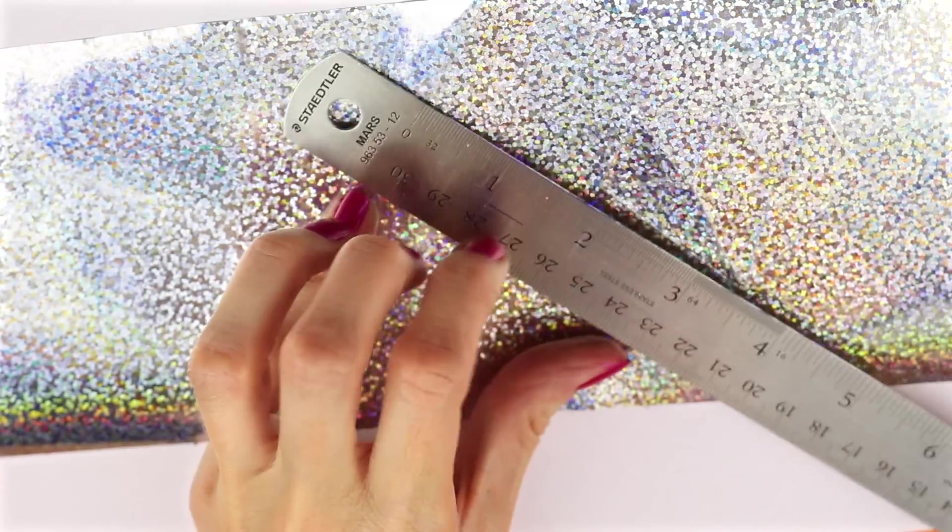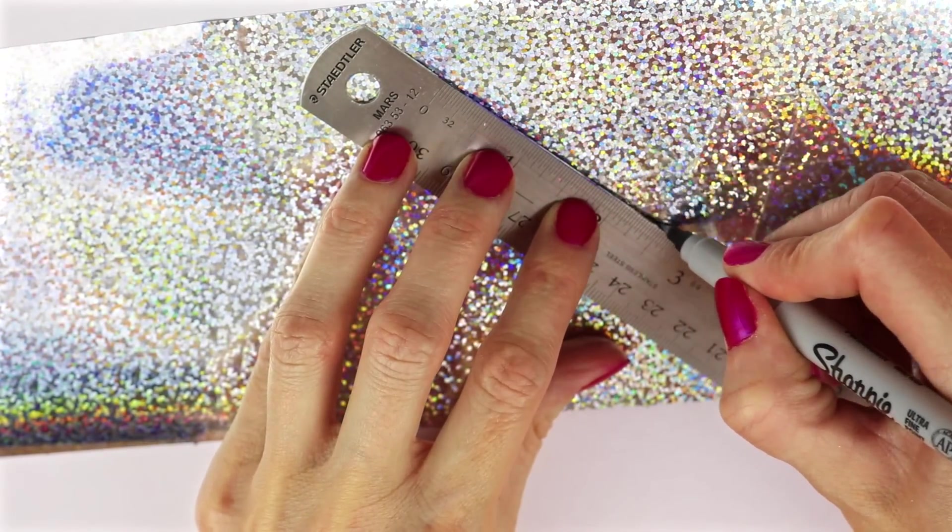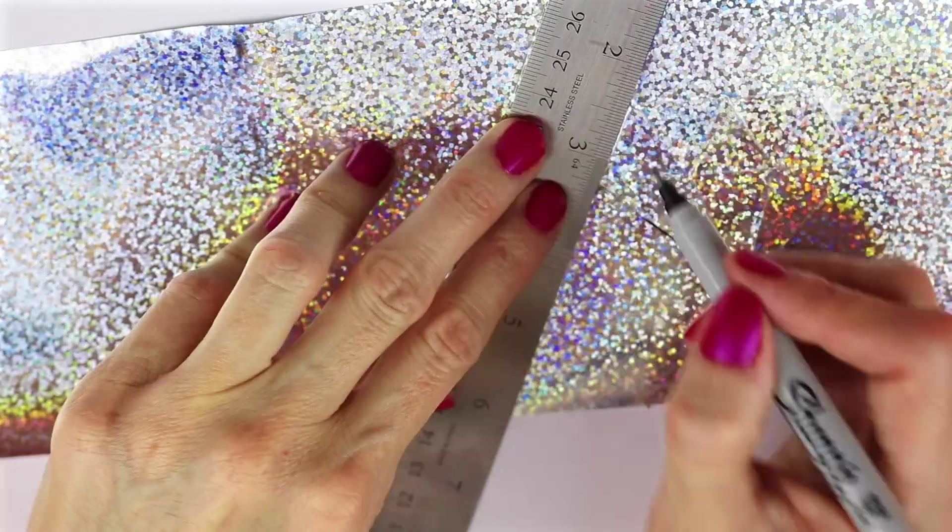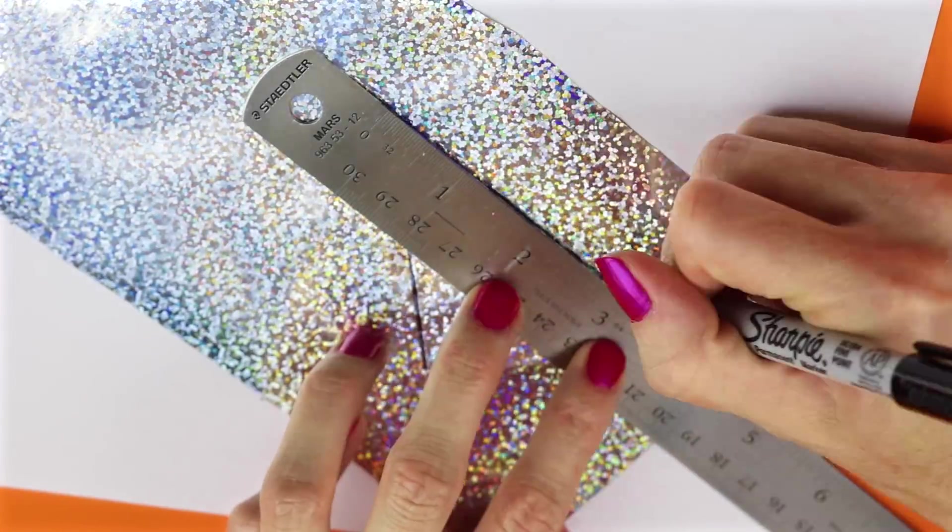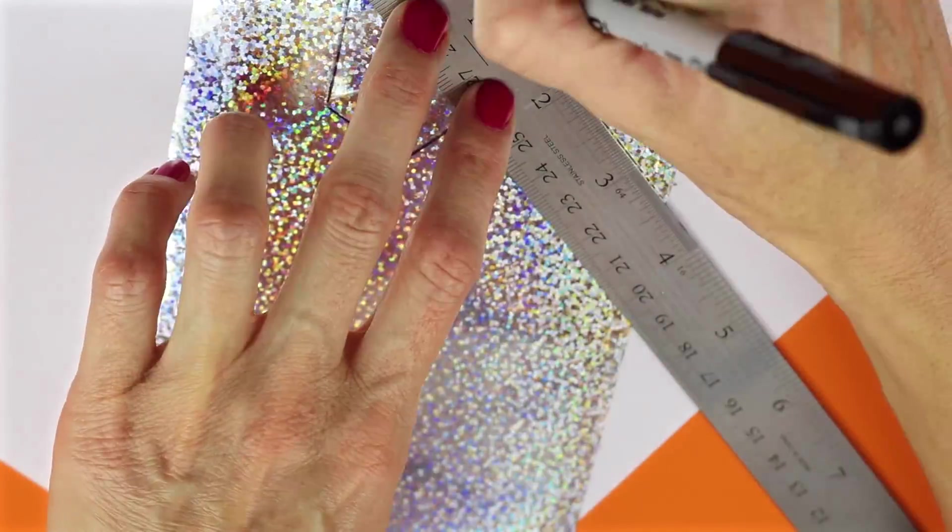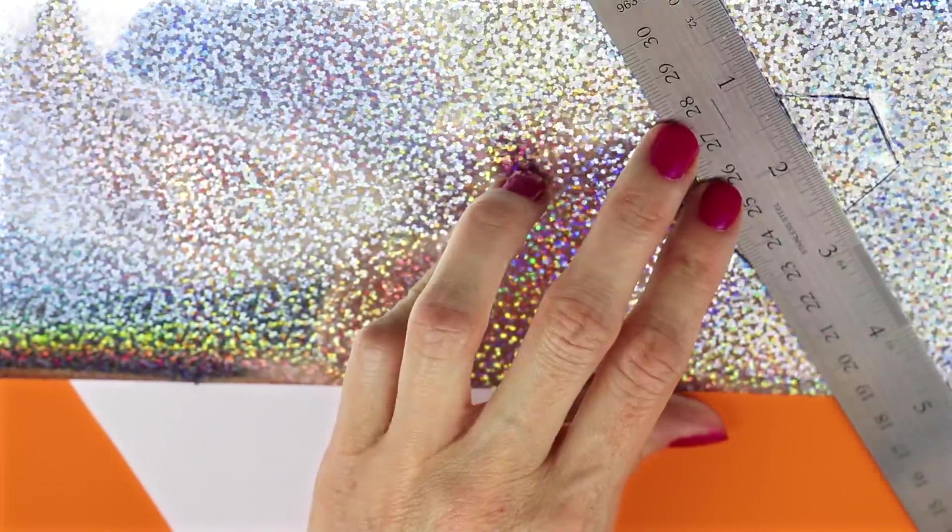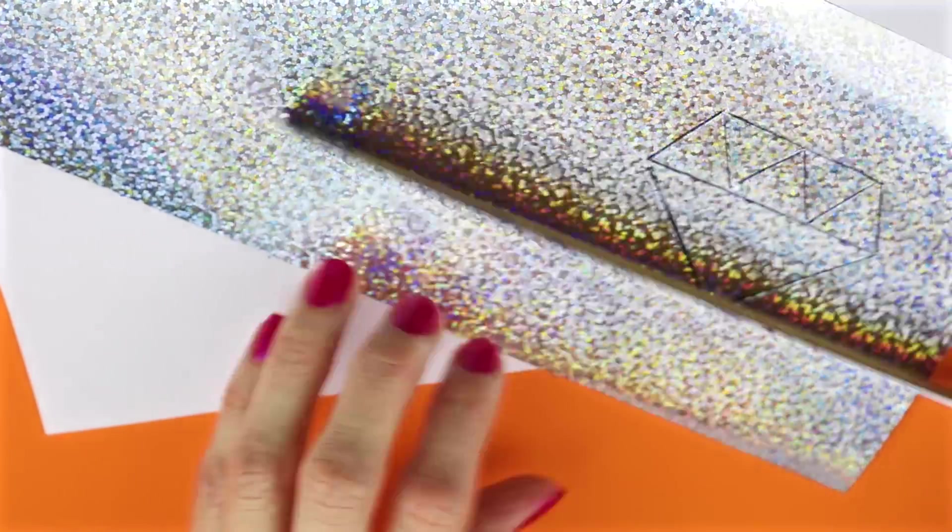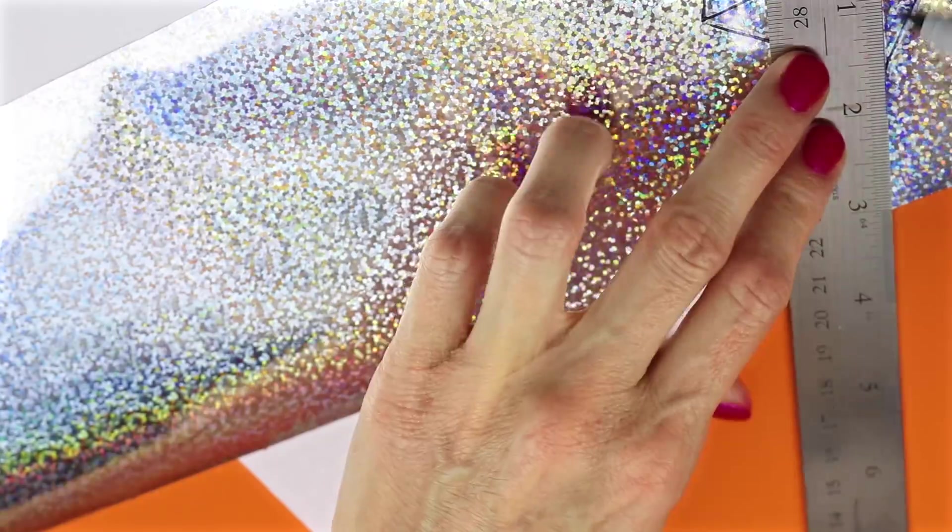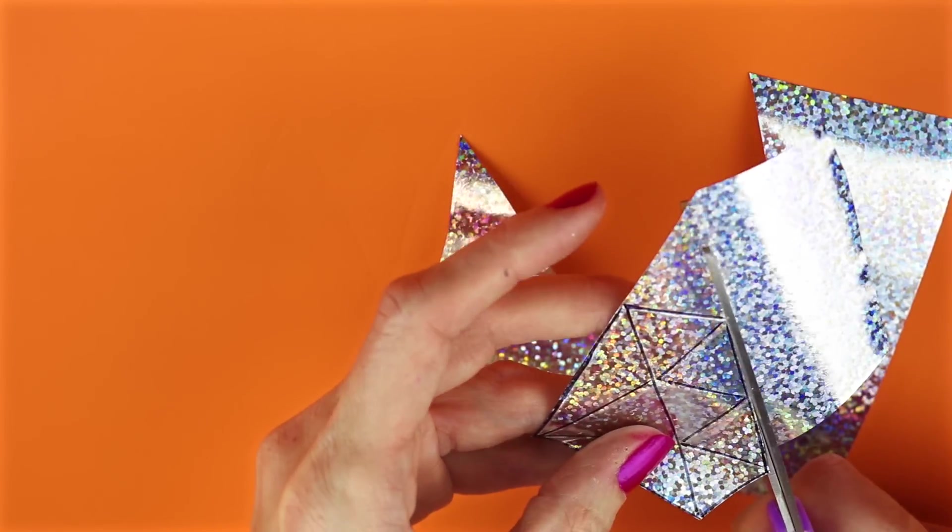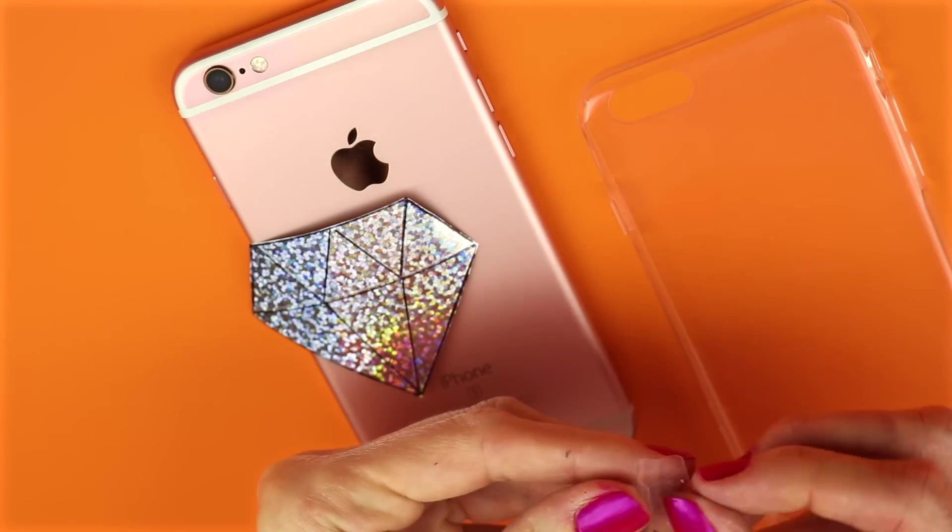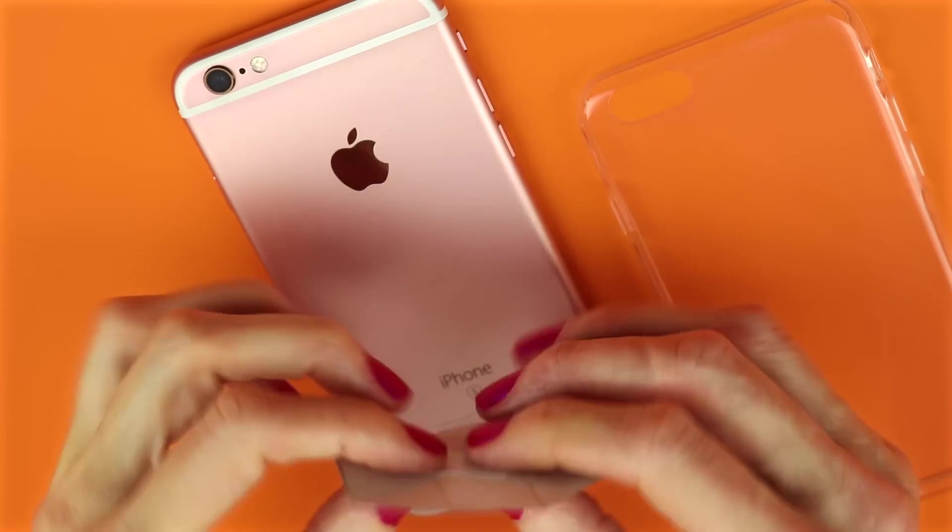With a black sharpie, I went over all of the lines. Once the lines are all drawn in with the sharpie, then just cut out the diamond. Using a piece of regular tape, I taped the diamond to the phone.